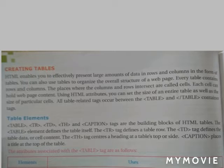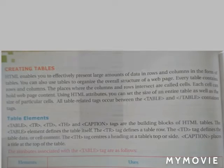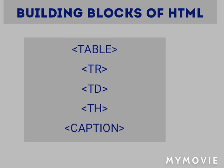We can use HTML attributes to set the size of an entire table as well as the size of a particular cell. The building blocks of HTML tags are table, tr, td, th, and caption.